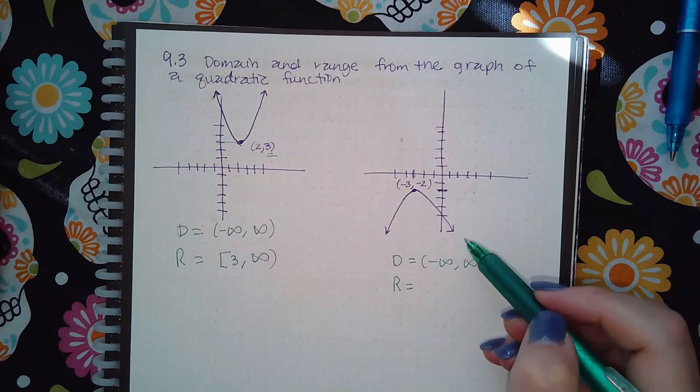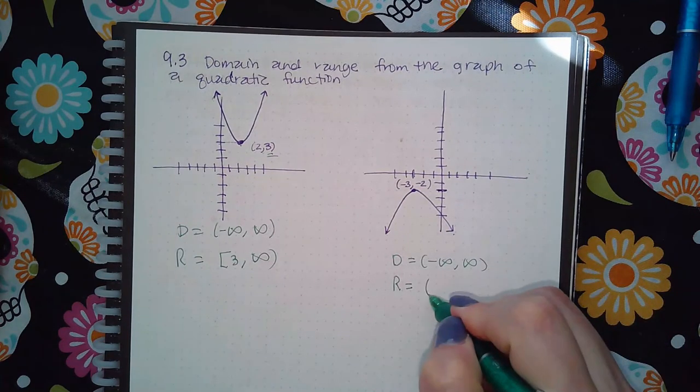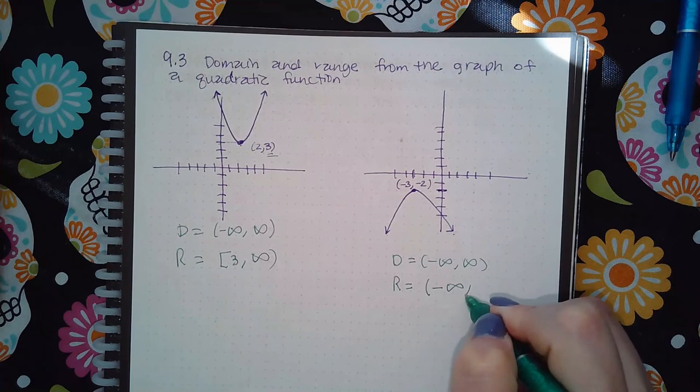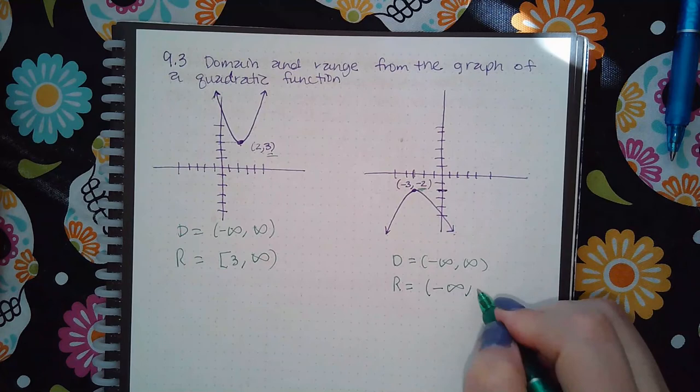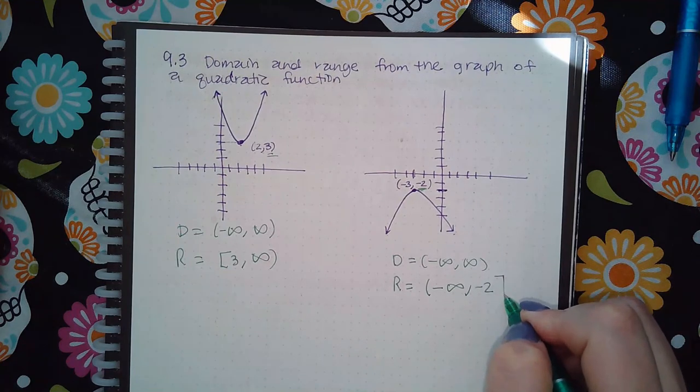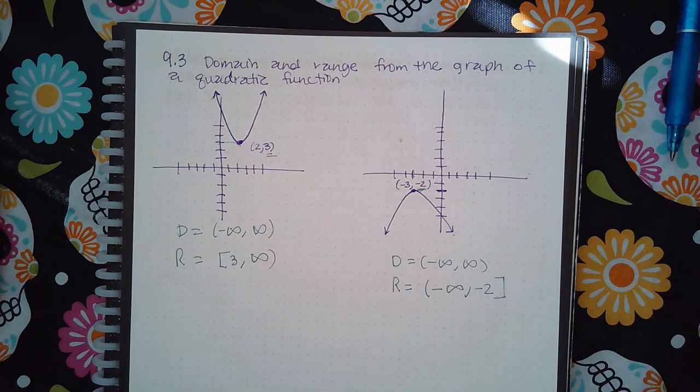If the arrows are going down forever, then the bottom is negative infinity. But then how high does it go? You have to look at the y-value which is negative 2, and then you put a bracket because there is a solid dot there.